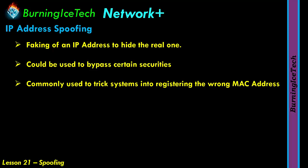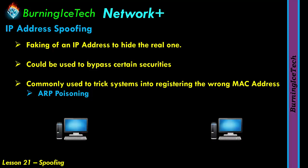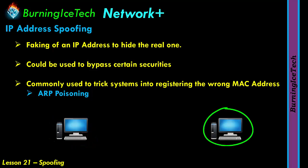IP address spoofing can also be used to trick systems into registering the wrong MAC address — this is generally referred to as ARP poisoning. Imagine two machines: the machine on the left is you, and on the right is a router at 192.168.0.1. When you access the router's IP address, your machine memorizes that router's MAC address. Next time you send information to that IP, it automatically goes to that MAC address. Switches in the network normally do forwarding based on MAC address.